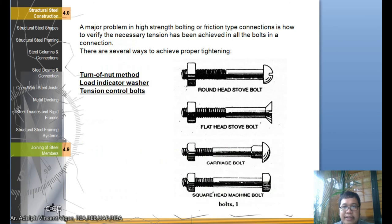A major problem in high strength bolting or friction type connections is how to verify the necessary tension has been achieved in all bolts in a connection. There are several ways to achieve proper tightening. First is the turn-of-nut method, the load indicator washer, and the tension control bolt. This is a round head stove bolt, this is a flat head stove bolt, this is a carriage bolt, and this is a square head machine bolt.